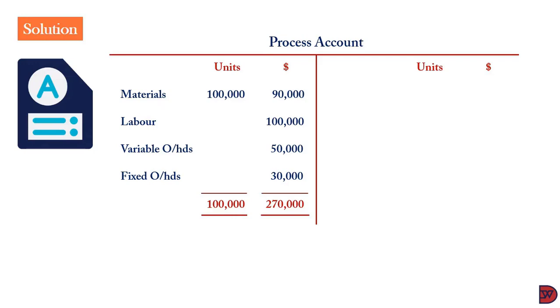When we come to the credits, we'll start with the normal loss. The unit was 10,000. It came with no value, meaning we lost it completely. Then the transfer, that is the final output, was 90,000 units at a cost of $270,000. Closing the account, we get 100,000 units and $270,000.